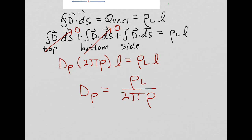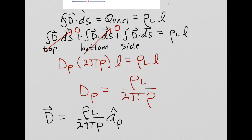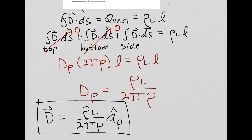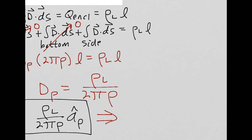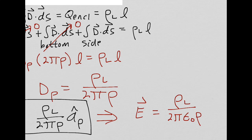So our electric flux density for the infinite line of charge is D equals rho sub L over 2 pi rho, in the A sub rho direction. And the electric field intensity E equals D over epsilon sub 0, so E equals rho sub L over 2 pi epsilon sub 0 rho, in the A sub rho direction.